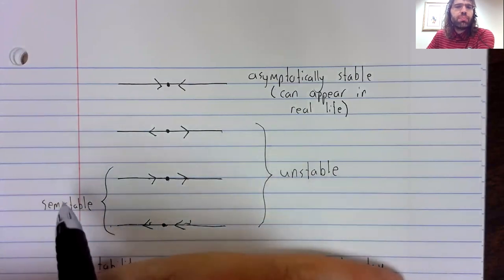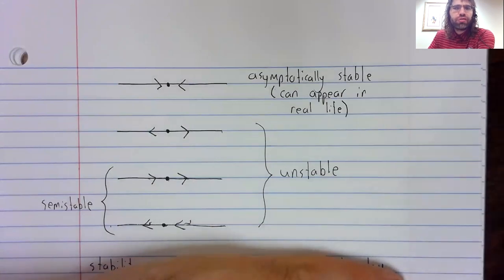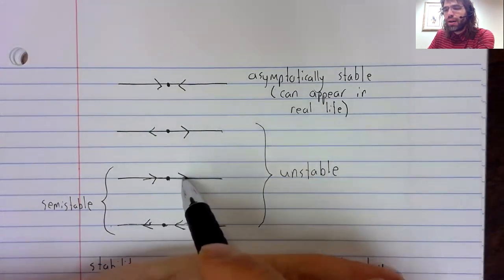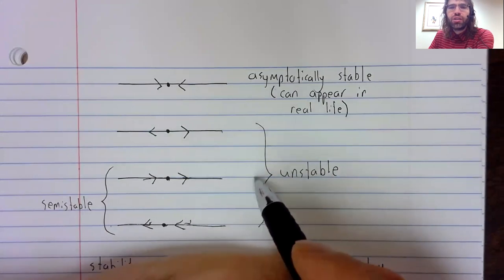That's where semi-stable comes from. Semi means half. These are kind of half of an asymptotically stable fixed point. They're asymptotically stable if you get knocked off in the right direction. Otherwise, they're unstable.